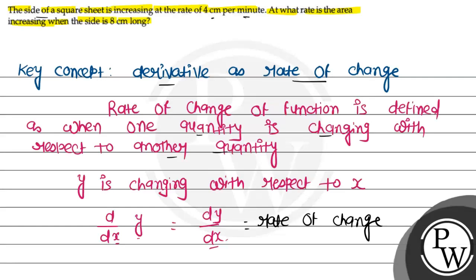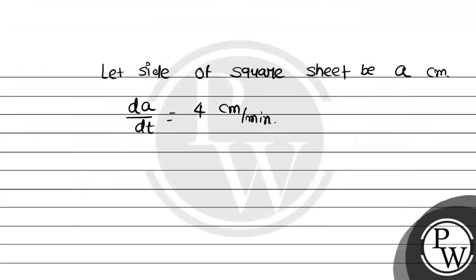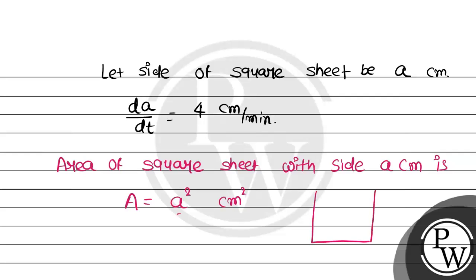We have to find how the area is increasing when the side is 8 cm long. So let's first define the equation of area of the square. Area of square with side a cm is A = a² cm².